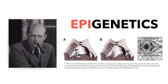Historically, the word epigenetics was used to describe events that could not be explained by genetic principles. Conrad Waddington, who lived between 1905 and 1975, is given credit for coining the term. He defined epigenetics as the branch of biology which studies the causal interaction between genes and their products, which bring the phenotype into being.